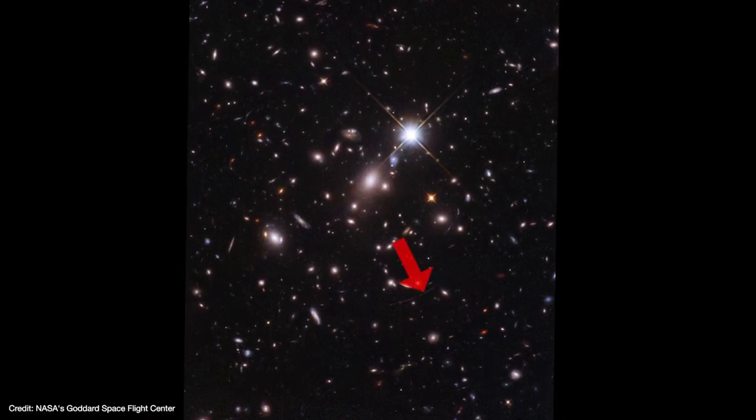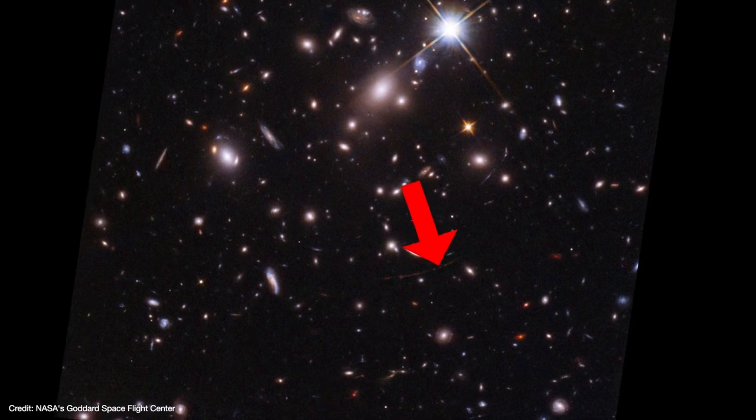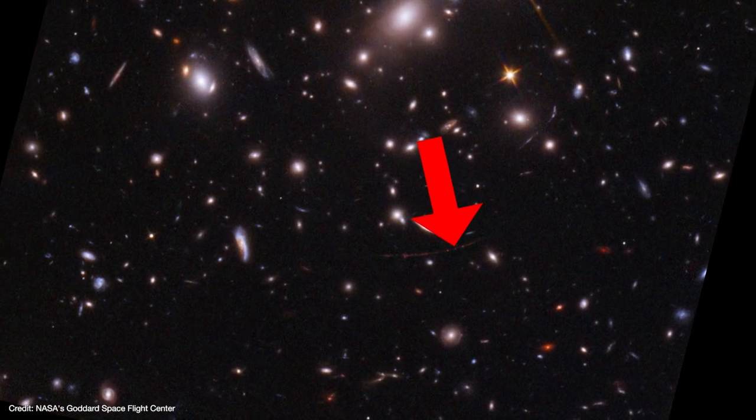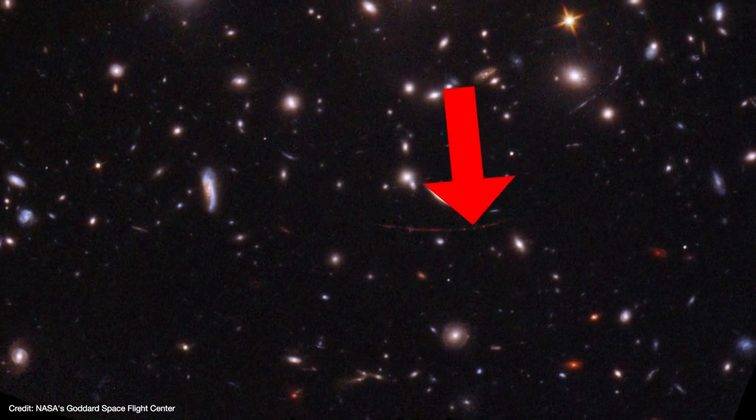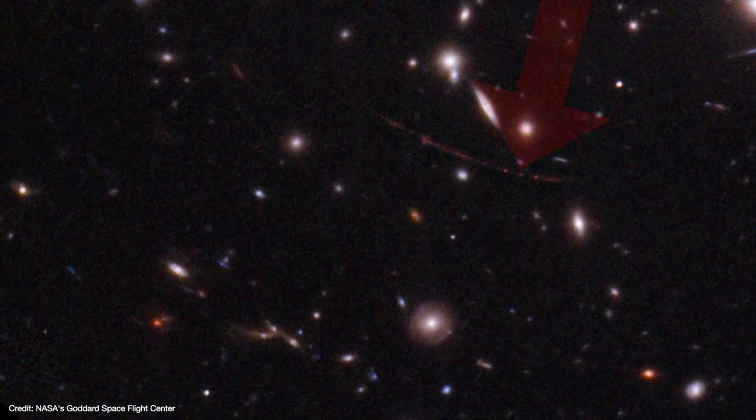The Hubble Space Telescope has found what appears to be the most distant star ever detected. It was found in a galaxy a whopping 12.9 billion light years away. That means we're seeing this star as it appeared less than a billion years after the Big Bang.